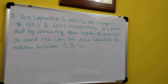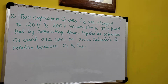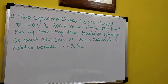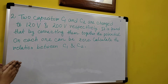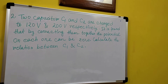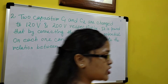Coming to the next problem for the capacitor-capacitance chapter. Two capacitors C1 and C2 are charged to 120 volt and 200 volt respectively. It is found that by connecting them together, the potential on each one of them is 0. If this holds, calculate the relation between C1 and C2.